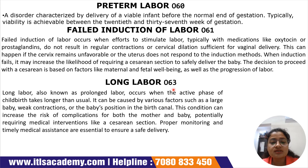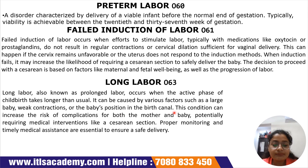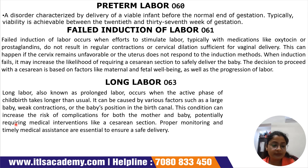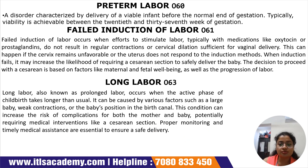Long labor, also known as prolonged labor, subcode O63, occurs when the active phase of childbirth takes longer than usual. It can be caused by various factors such as a large baby (typically over 4 to 4.5 kg, versus the ideal 2.5 to 3.5 kg), weak contractions in the uterus, or the baby's position in the birth canal. This condition increases the risk of complications for both mother and baby, potentially requiring a caesarean section.